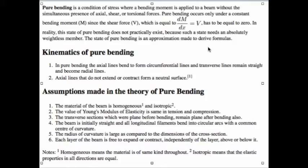So there are many assumptions on it. Kinematics of pure bending: in pure bending, the axial lines bend from a circumferential line and transverse lines remain straight and become radial lines. You will understand it after you see the figure. Axial lines do not extend or contract from a neutral surface, that's obvious. Assumptions made in the theory of pure bending: the material of a beam is homogeneous and isotropic. Young's modulus of elasticity is same in tension and compression. Transverse sections which were plane before bending remain plane after bending also. Beam is initially straight and all longitudinal filaments bend into circular arcs with common center of curvature.